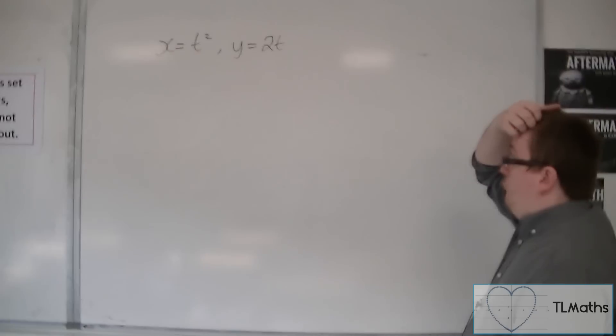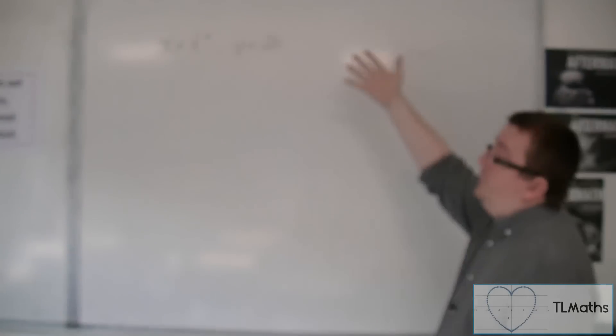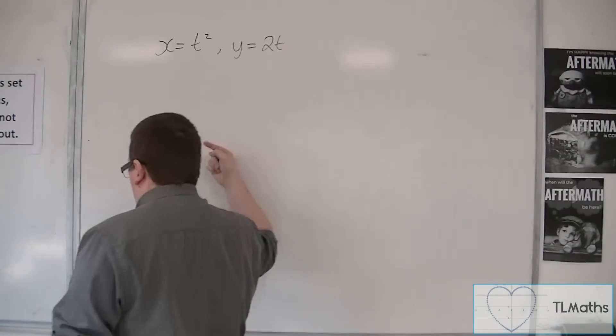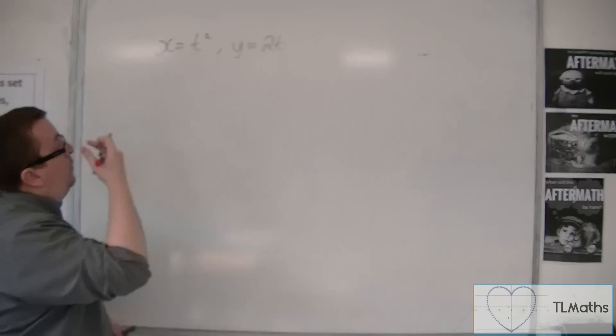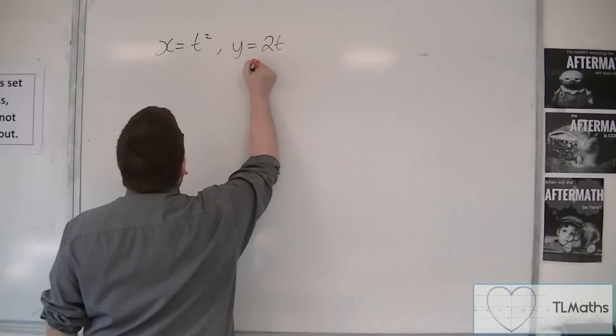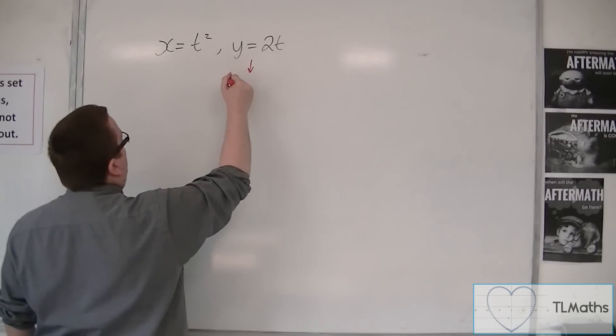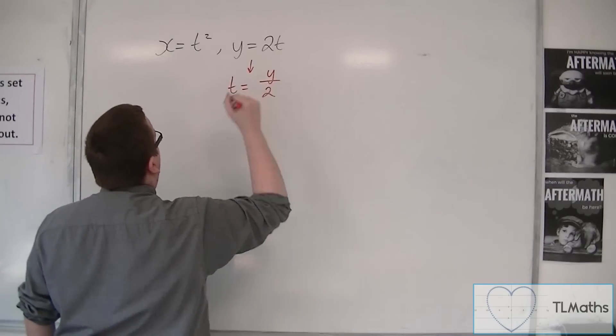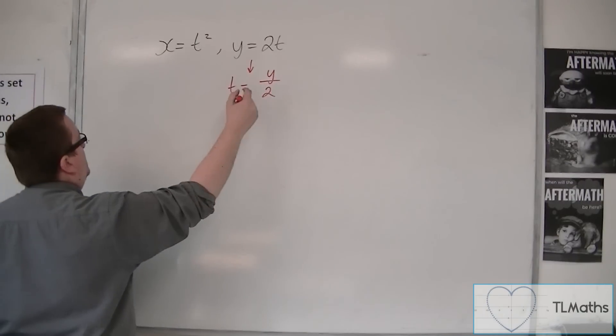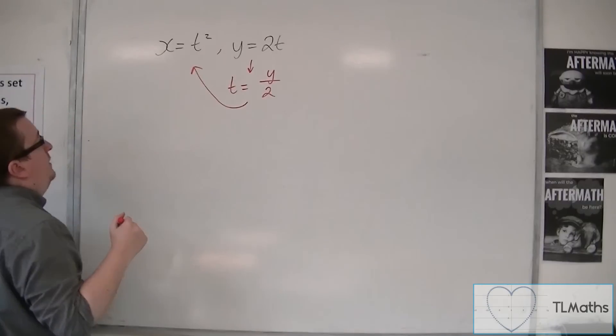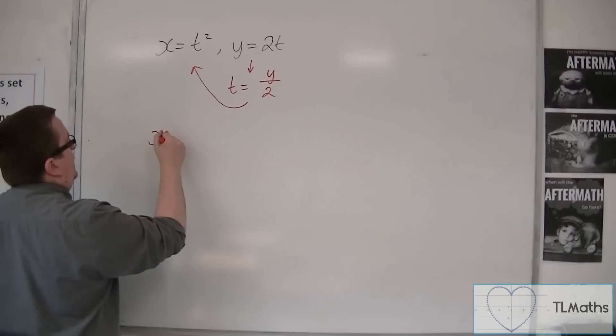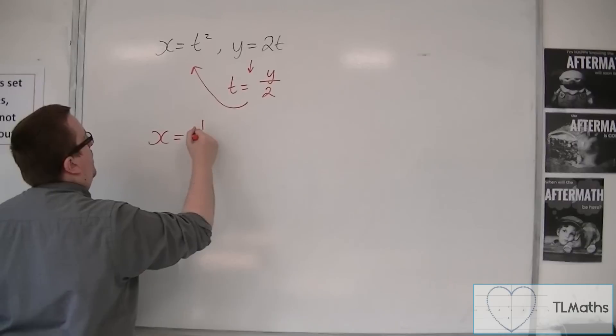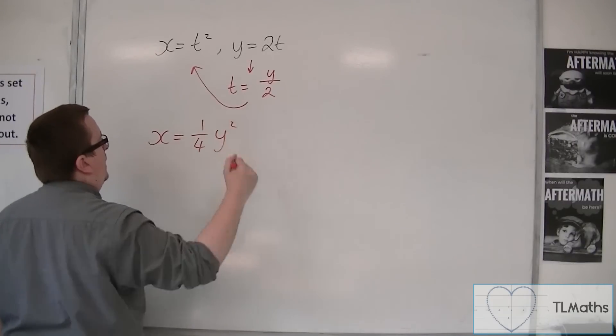So what we're going to do is go from these two parametric equations to a Cartesian equation. That's the first step. So I'm going to rewrite y equals 2t in terms of t. So t is equal to y over 2. Then I can substitute that into the first equation and write that as x is equal to y over 2 squared, so a quarter y squared.